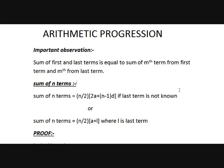If you observe carefully, the sum of the first term and the last term is equal to the sum of the nth term from the first and the nth term from the last. For example, there is an arithmetic progression with 5 numbers: 1, 3, 5, 7, 9 — these are odd numbers. The sum of first and last term: 1 plus 9 is 10. The second term from first is 3, the second term from last is 7, and 3 plus 7 is 10. The middle term is 5, and 5 plus 5 is also 10.